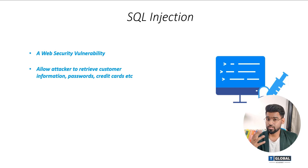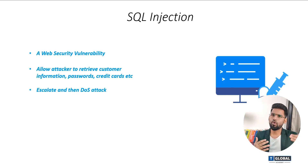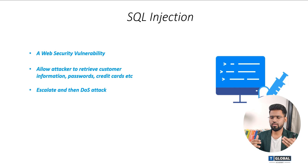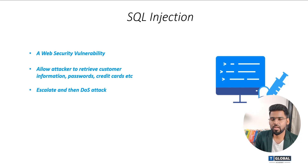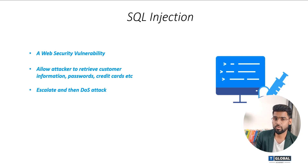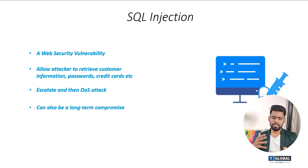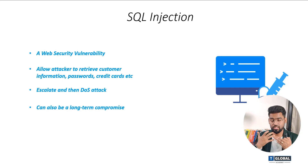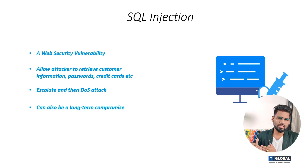In the case of a successful SQL injection, if the attacker is able to perform privilege escalation, they can even carry out a denial of service attack — preventing genuine users from being served by the server while dummy traffic floods it. It can also enable long-term compromise, like an advanced persistent threat, depending on how powerful the SQL injection is and how strong the attacker is with SQL queries.